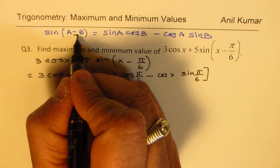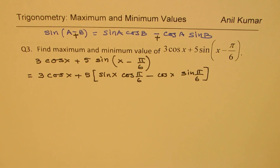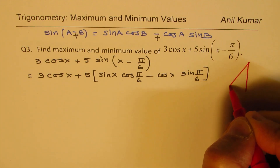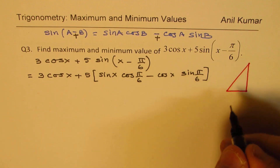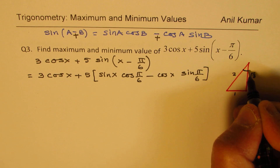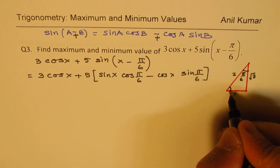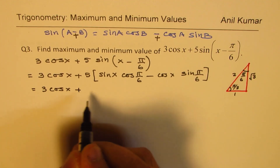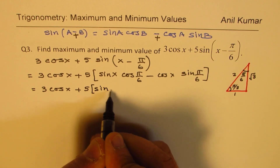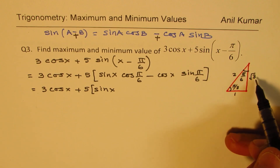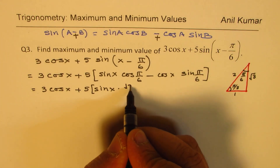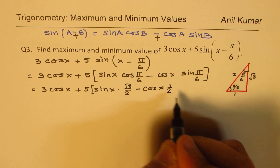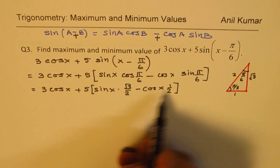Note that if the sign inside is plus, then this formula also carries plus. Now, what are the values for π/6? We can use a right triangle with sides 1, √3, and 2. The angle of interest is π/6. So cos(π/6) equals √3 over 2, and sin(π/6) equals one half. We substitute these values: 3 cos x plus 5 times (sin x · √3/2 minus cos x · 1/2).